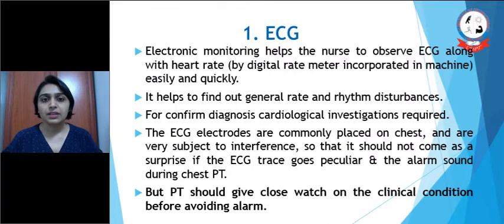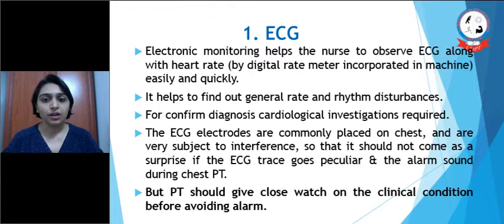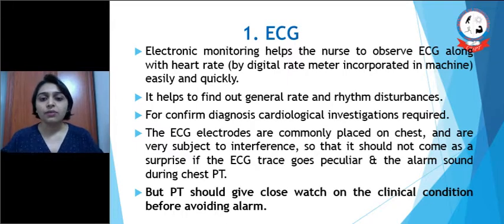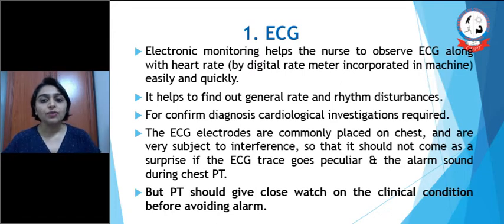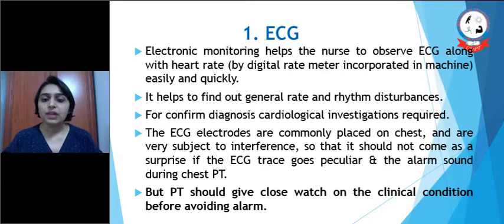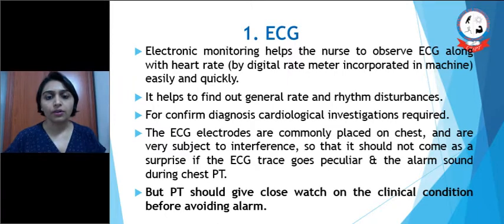First is ECG. Electronic monitoring helps the nurse to observe ECG along with heart rate. It is done usually by a digital rate meter incorporated into the machine. It is done easily and quickly with the help of electronic monitoring. It helps to find out the general rate and rhythm disturbances. For confirmed diagnosis, cardiological investigations are required such as echocardiography and further.